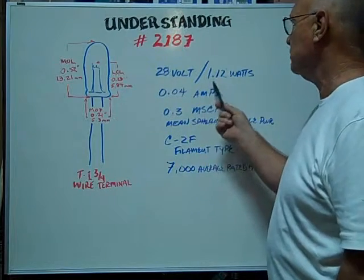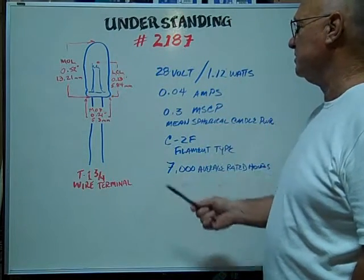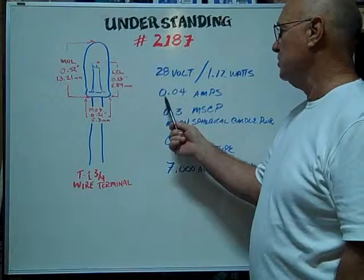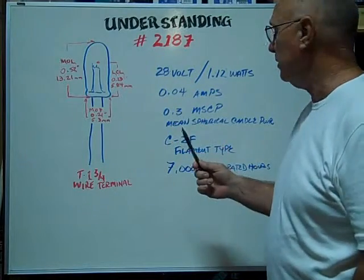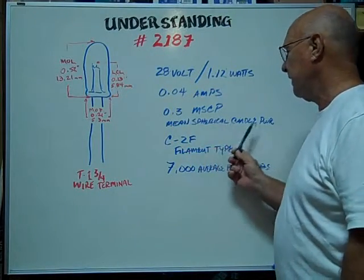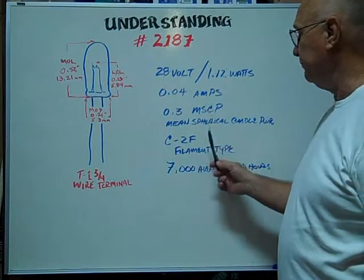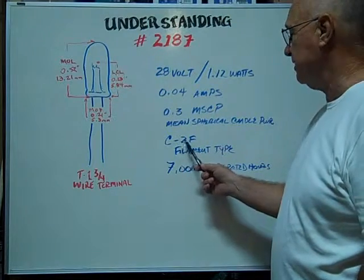It's rated at 28 volts, 1.12 watts, amps are 0.04. The mean spherical candle power is 0.3. Filament type is a C2F.